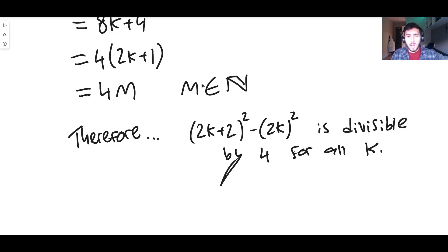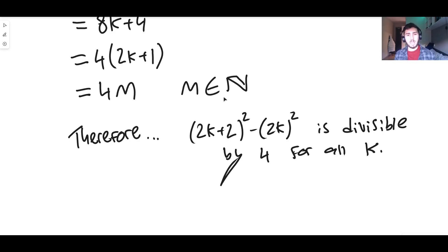And that's the proof. Your conclusion is just to write the result clearly — 4 times some whole number means it's divisible by 4. That's how you use odd and even numbers in a proof. I hope that was helpful, and I'll see you in the next video.